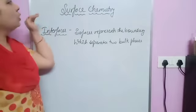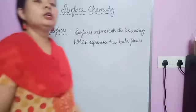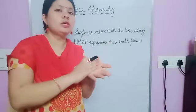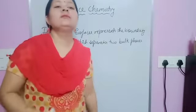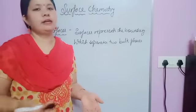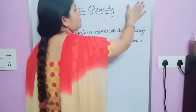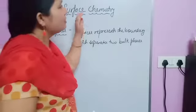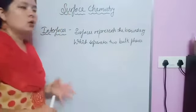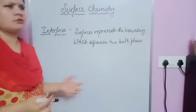Now, what is surface chemistry? It is a branch of chemistry which deals with the nature of surfaces — we are talking about only the surface, not the bulk. It deals with the nature of surfaces and the phenomena that occur at the surfaces or interfaces. For example, the surface of this board — what properties it shows — that is what surface chemistry deals with.